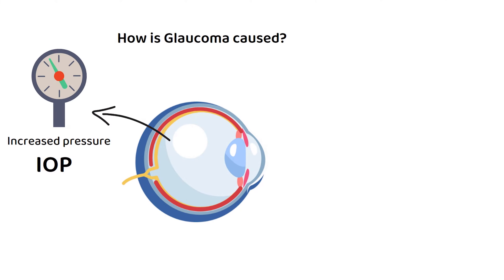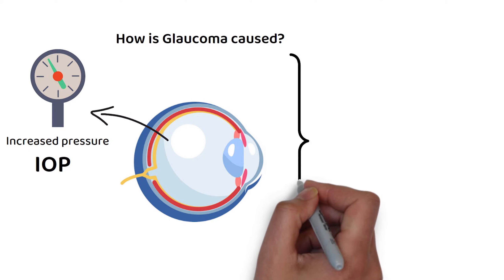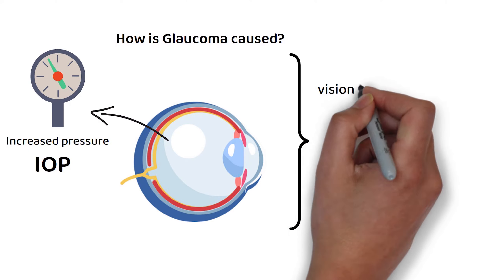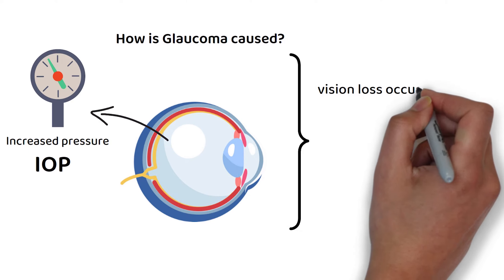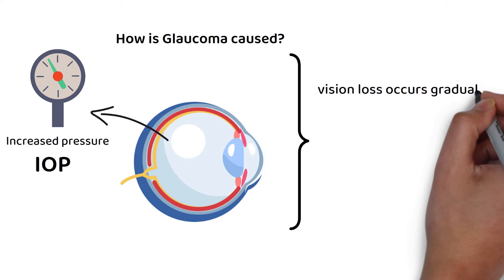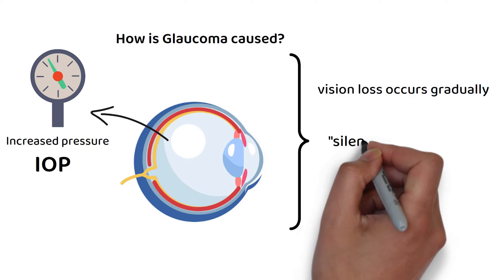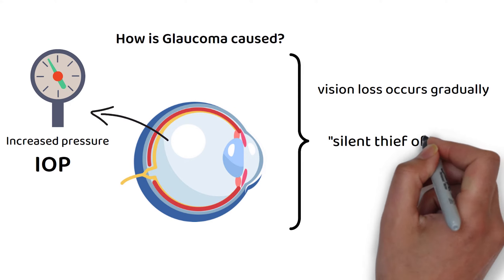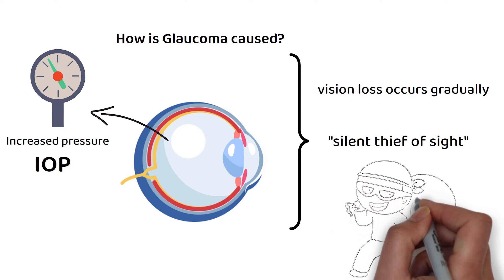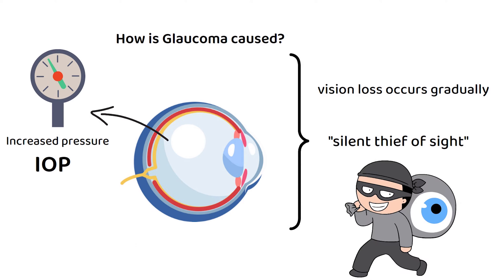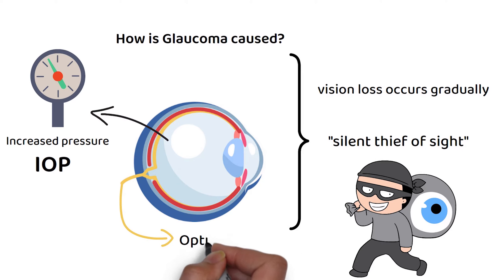The disease is progressive, meaning that vision loss occurs gradually over time, and it is often referred to as the silent thief of sight, because symptoms often do not appear until significant damage has already been done to the optic nerve.